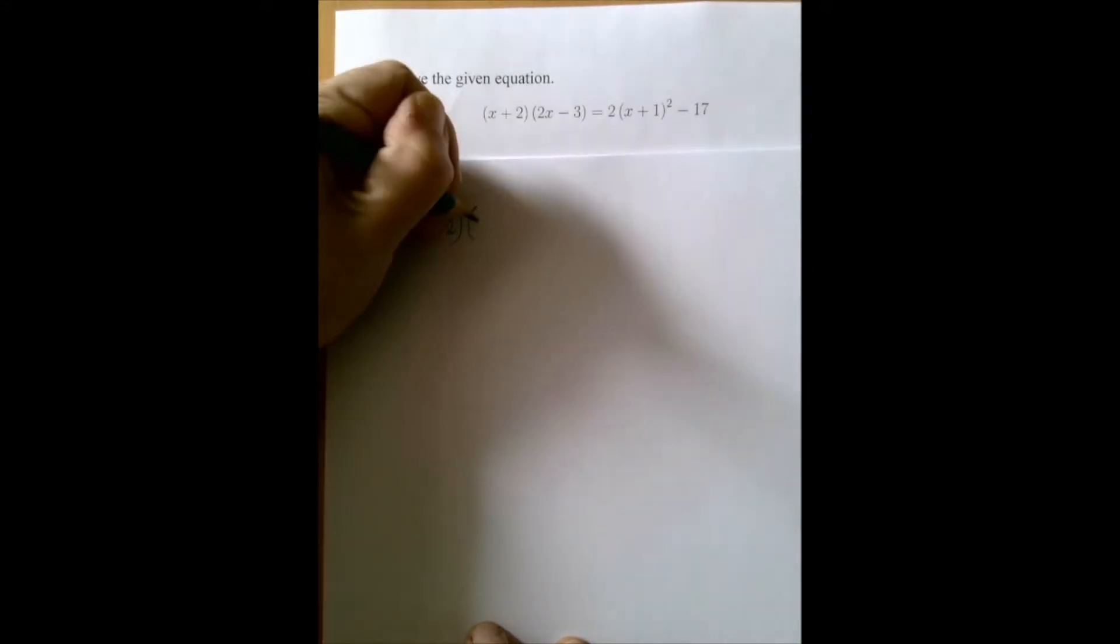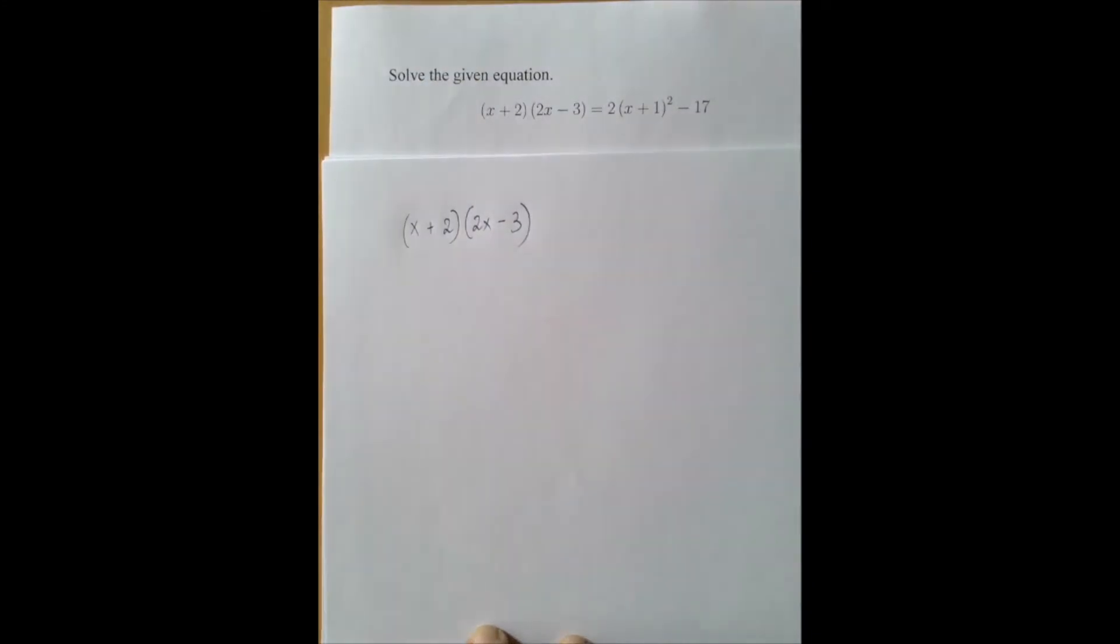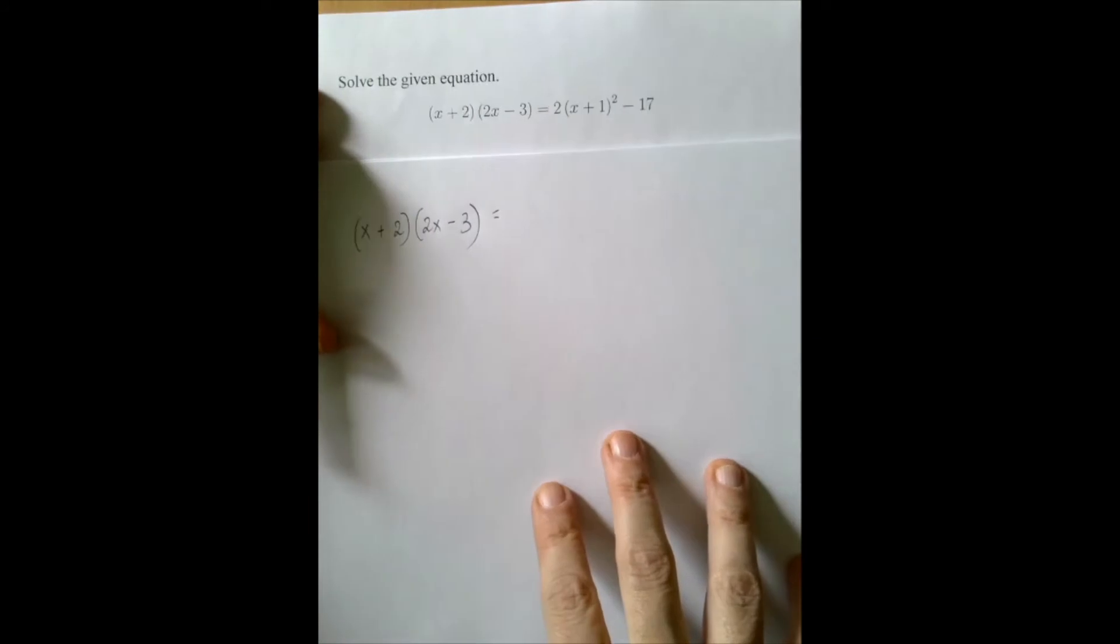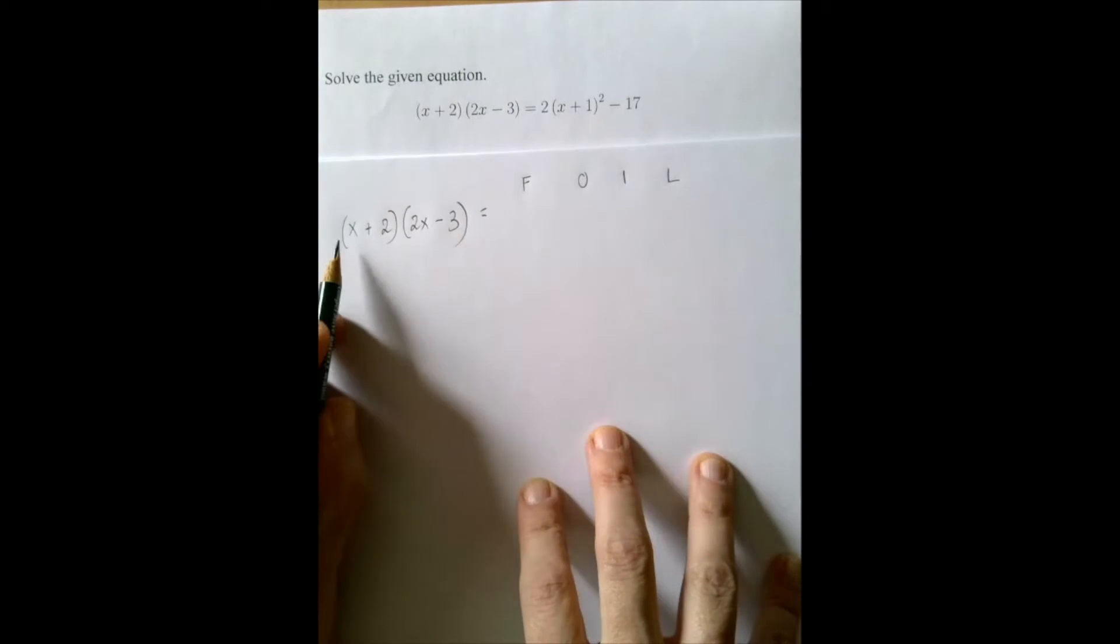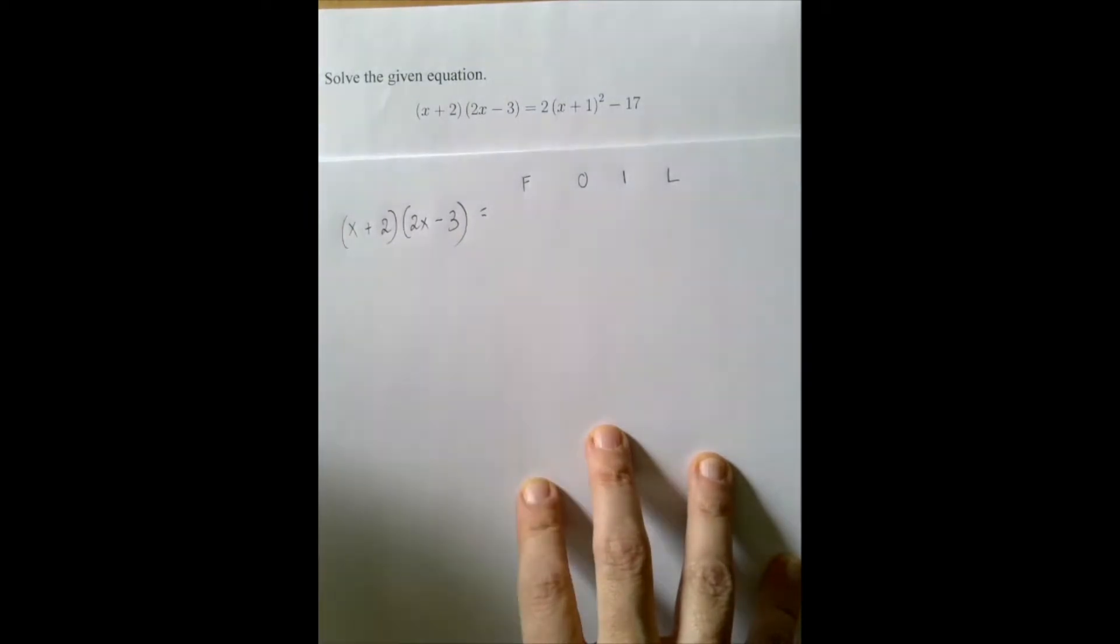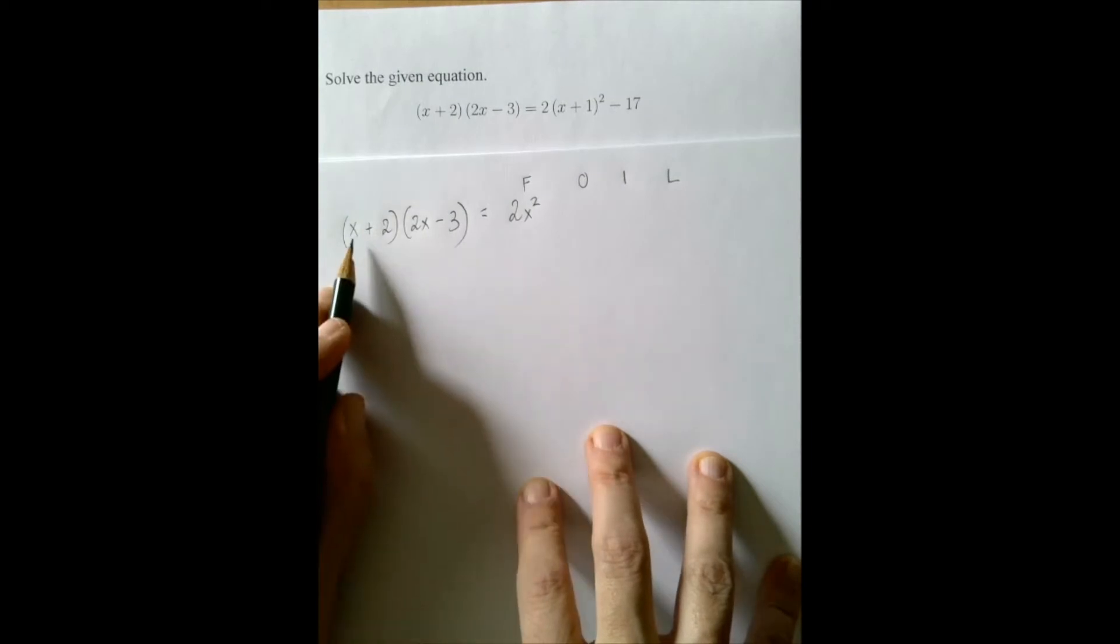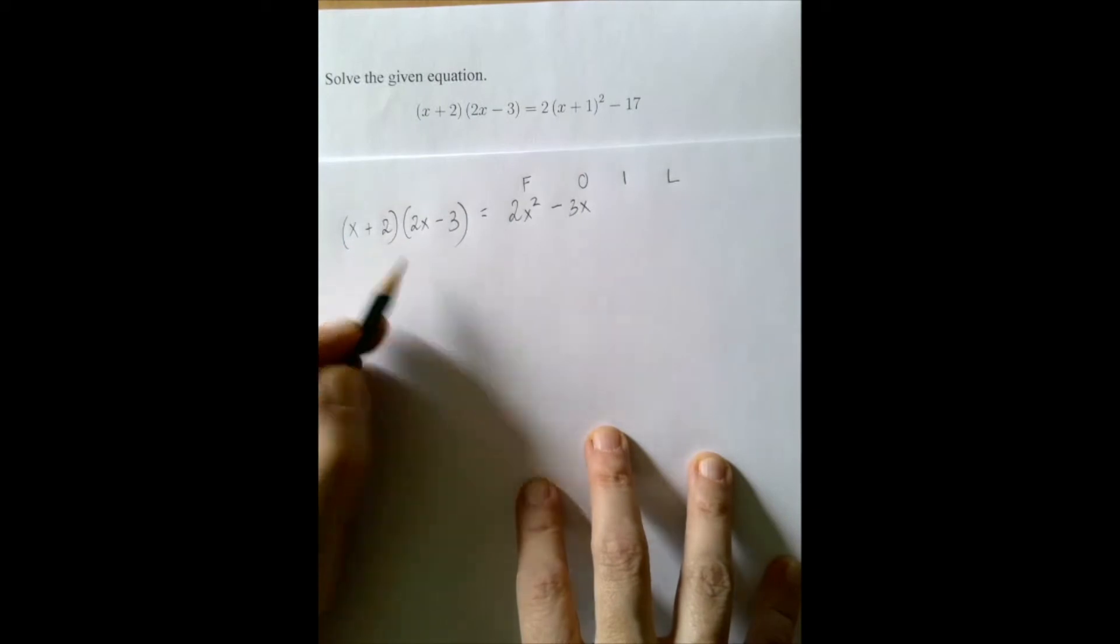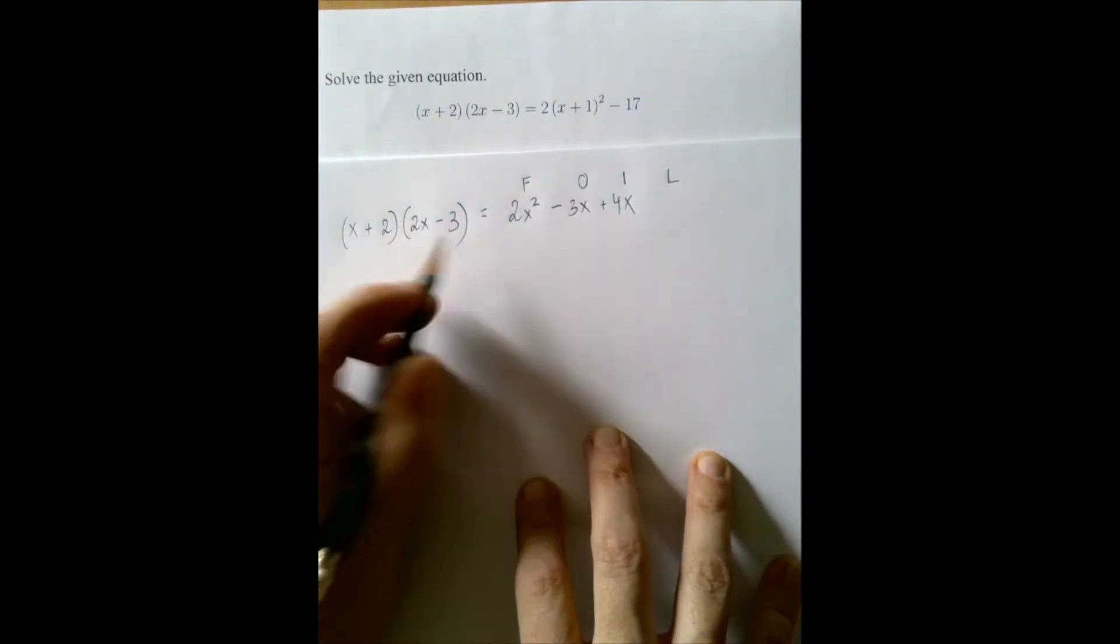When you have a two-piece polynomial, called a binomial, multiplying another binomial, then we can apply the distributive law by using this thing called FOIL. F stands for the first with the first, so x times 2x, that's 2x squared. O is the two outer terms, that's a negative 3x. And then I is for the inner terms, plus 4x.